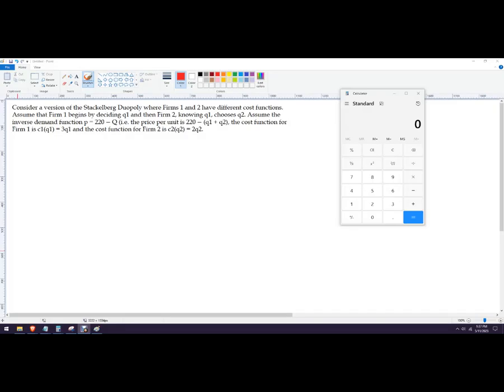Hello out there to you. In this problem, we're going to do a Stackelberg duopoly solution. So basically, we're solving for firm 1's quantity when they get to pick first, and then firm 2's quantity when they get to pick second.